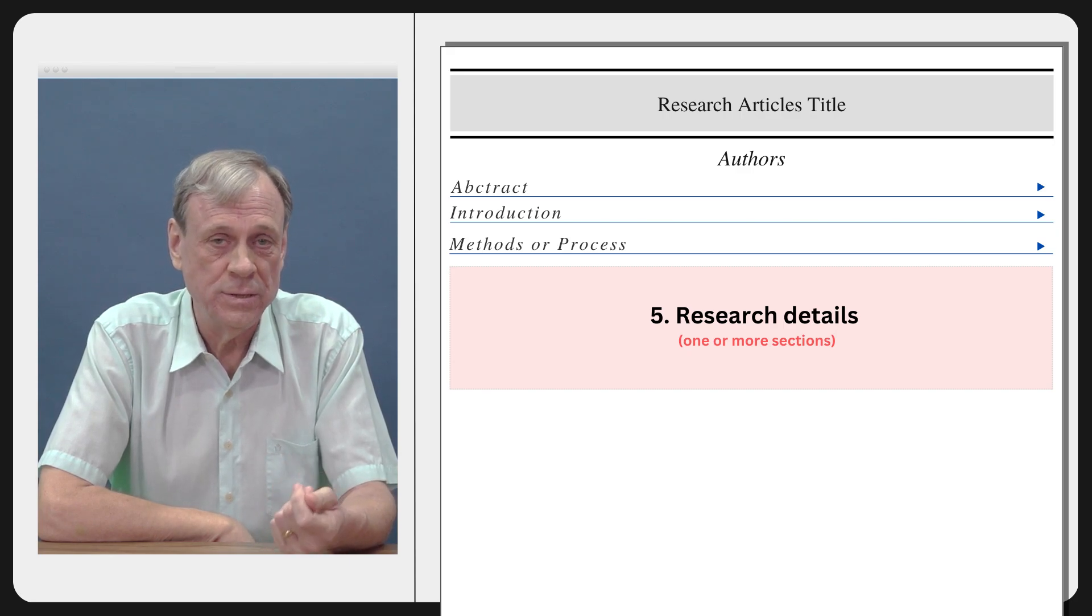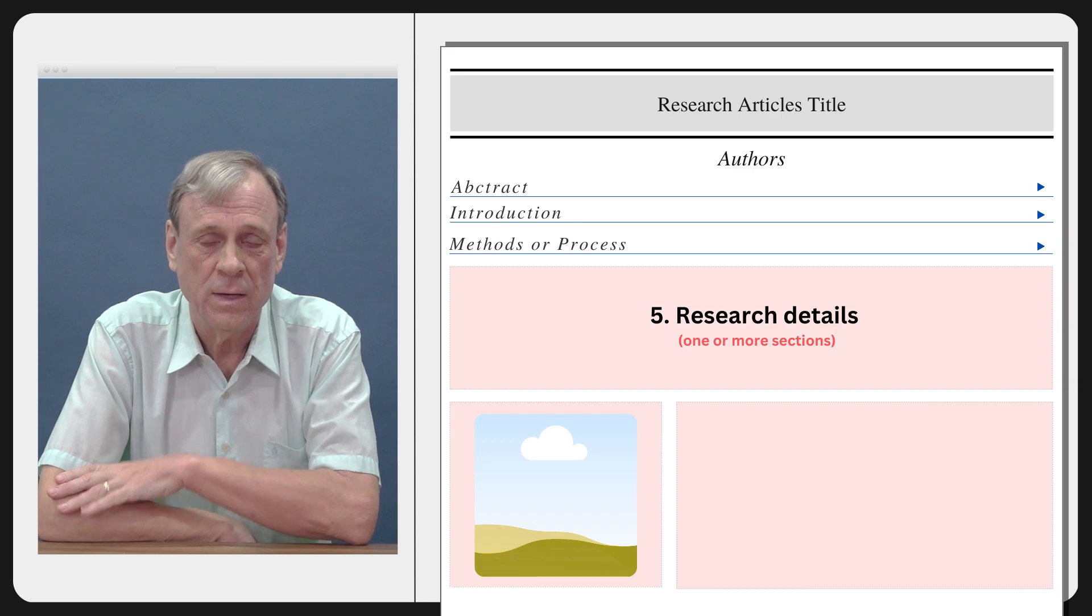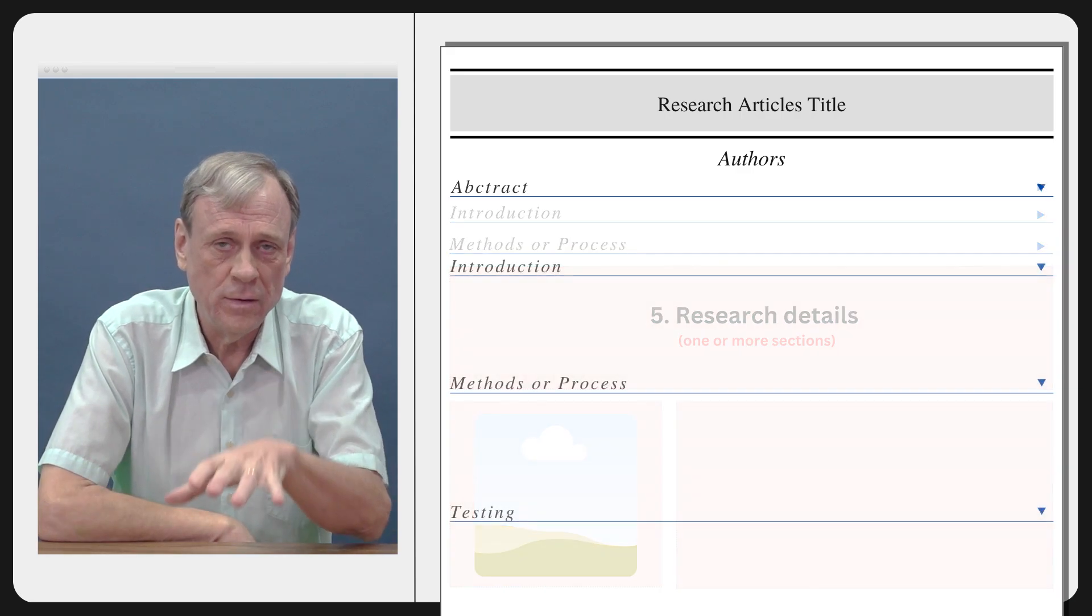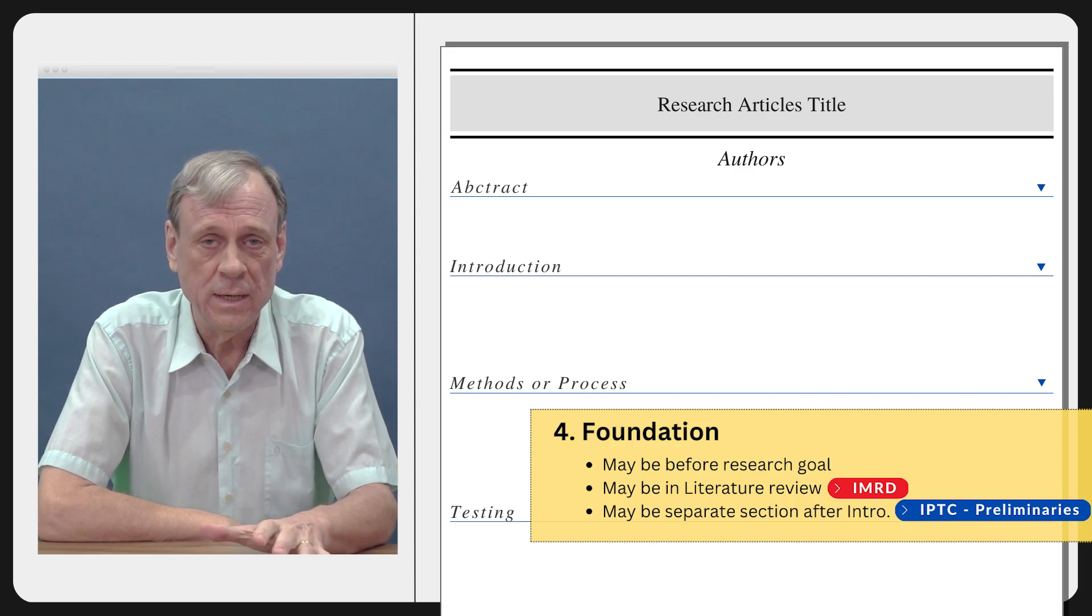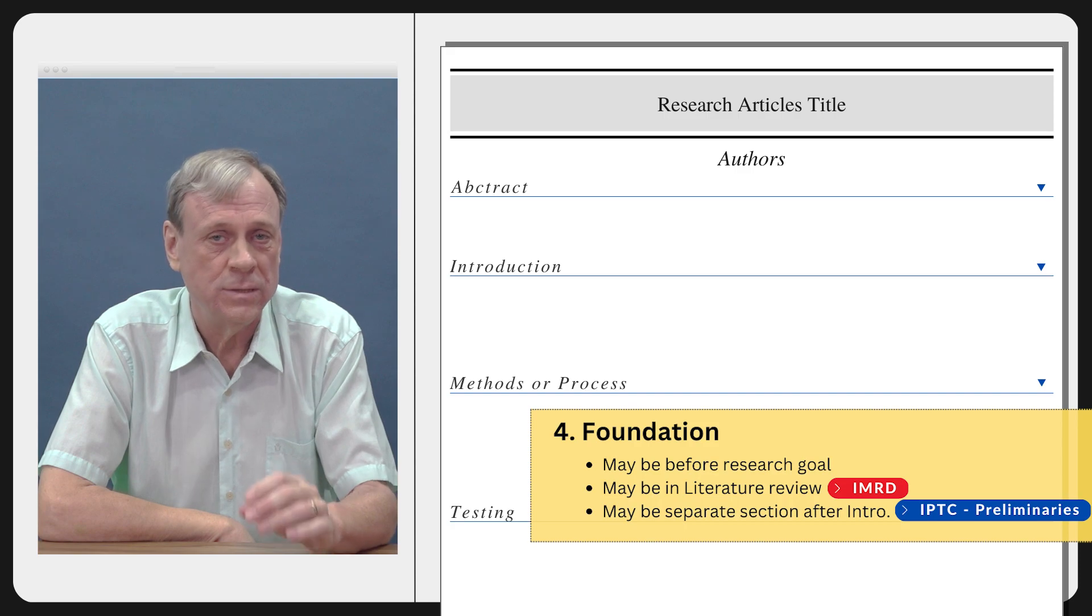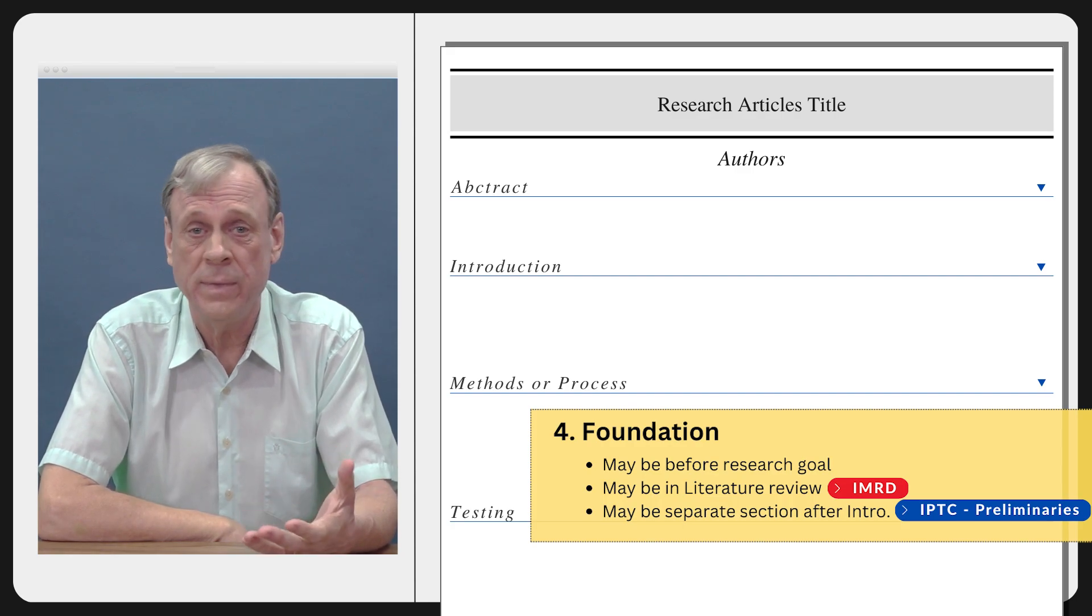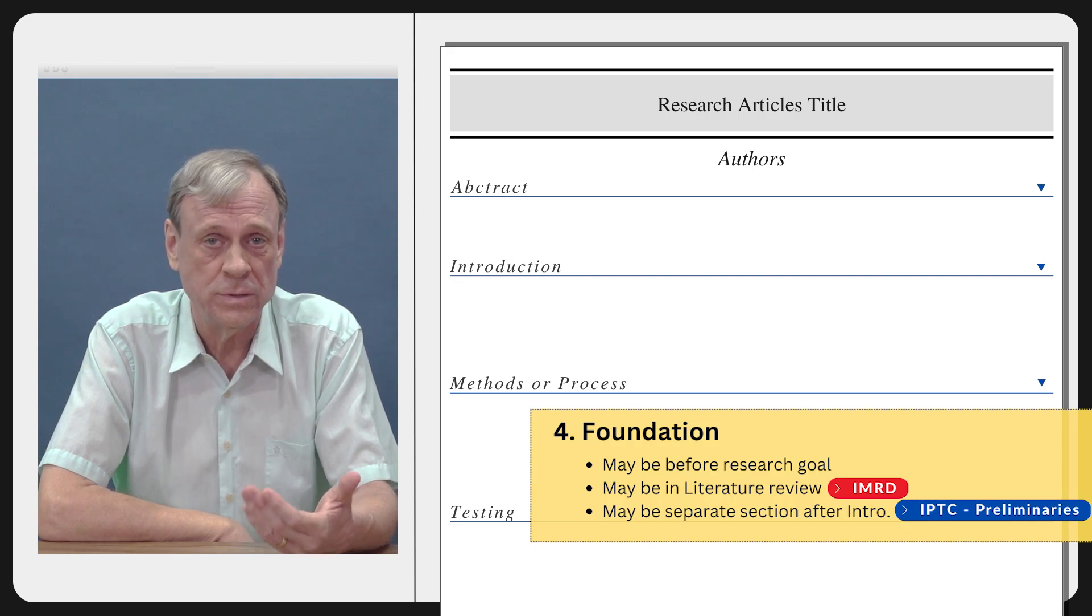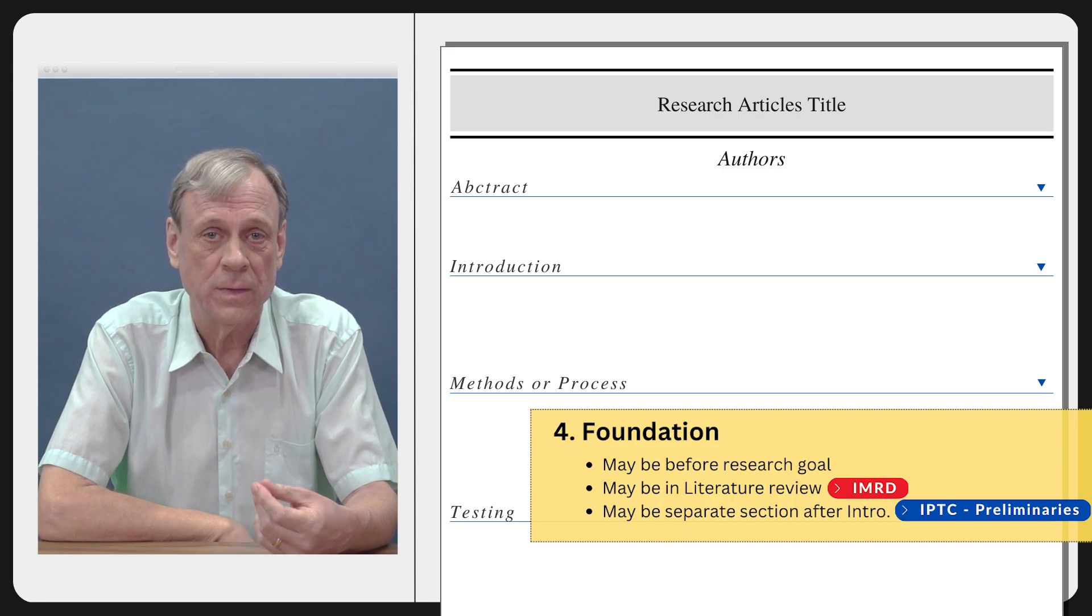Now again the research details, that's basically the methods and that's pretty easy to find. It may be one section in IMRD, it may be several sections in engineering in a process division, but it's fairly straightforward. The foundation can be in different places. Sometimes it will be just a very short indication just before the research goal, one paragraph or even part of a paragraph. Sometimes it's not really stated if there's only one main method that's being used in a field at a particular time.